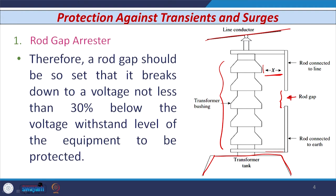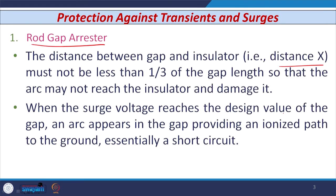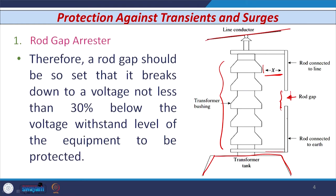A rod gap should be set so that it breaks down at a voltage not less than 30 percent below the voltage withstand level of the equipment to be protected. Whenever the surge voltage reaches the design value, the arc appears in the gap providing an ionized path to the ground — essentially a short circuit. The arc appears across the gap, providing the path, and the bushing is protected.